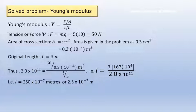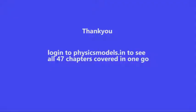So substituting, we get 2.0 × 10¹¹ is equal to F/A by L/capital L. Put in the numbers and we get l as 250 × 10⁻⁷ meters, or we can write it as 2.5 × 10⁻⁷ meters.